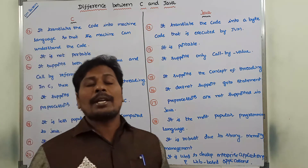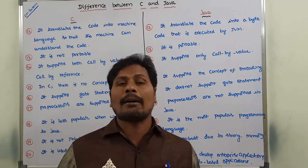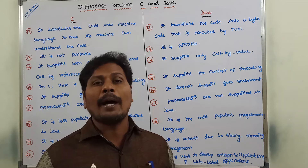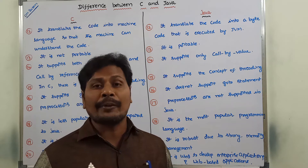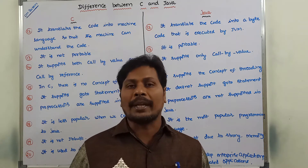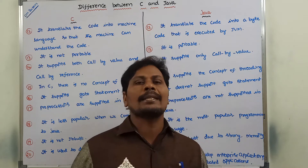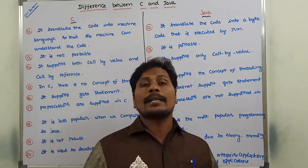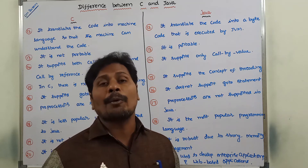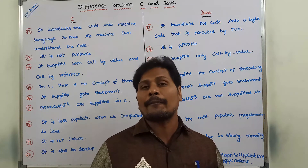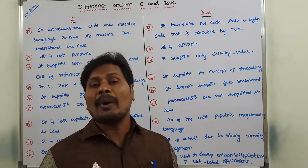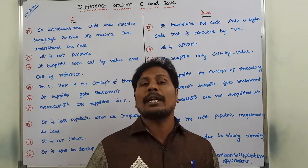Next: C language supports two parameter passing techniques — first is call by value and second is call by reference. In call by value we pass the value of the parameters, whereas in call by reference we pass the addresses of the parameters. Whereas Java supports only call by value — it does not support call by reference, because call by reference involves passing addresses, and Java does not support pointers. Hence only call by value parameter passing is supported in Java.